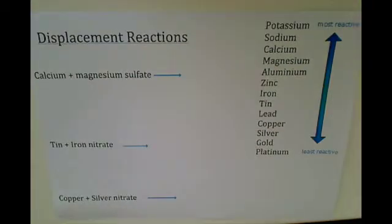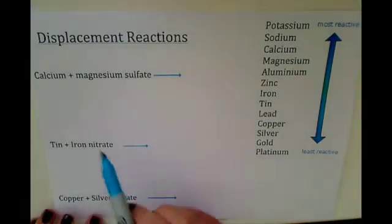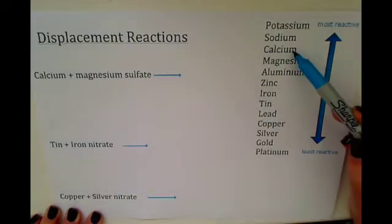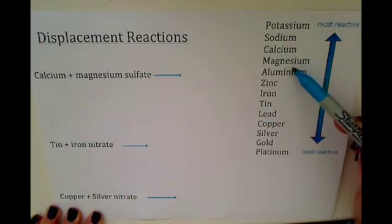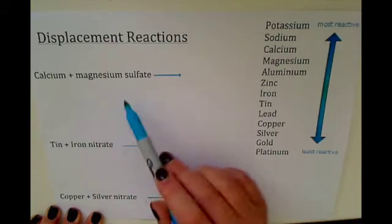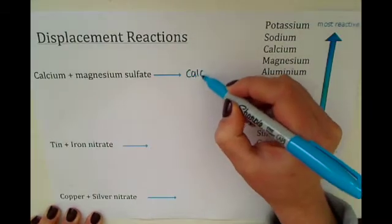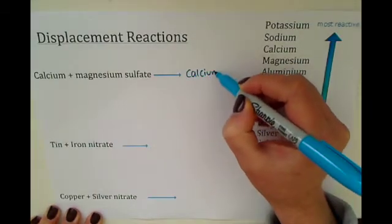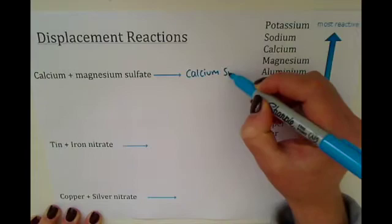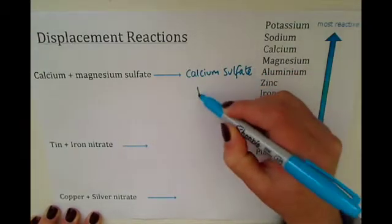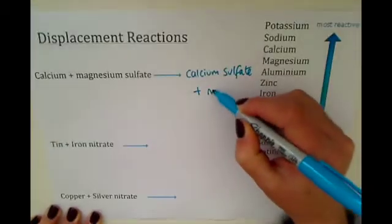In the first example, we look for calcium and magnesium. Calcium is higher on the reactivity series than magnesium, so this will work. We'd be left with calcium sulphate plus magnesium.